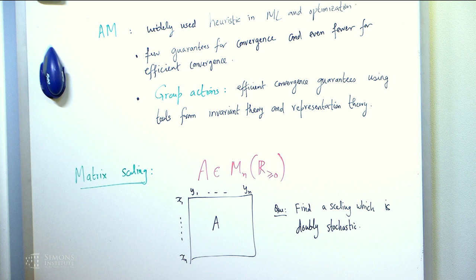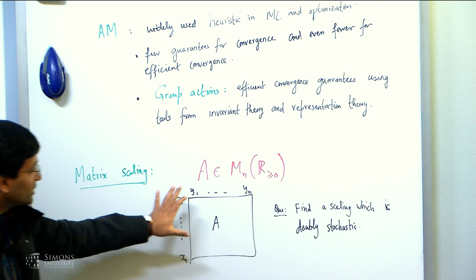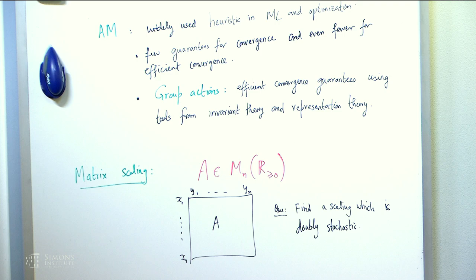So we saw this example in Navi's talk: A is a non-negative matrix and you want to scale A — meaning you multiply each row by some number, multiply each column by some number — and you want the resulting matrix to be doubly stochastic, i.e., all the row and column sums equal one. That's the matrix scaling problem. Then we have the Sinkhorn-Knopp algorithm that uses two simple primitives.